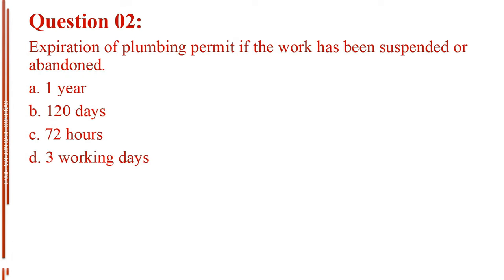Question number 2. Expiration of plumbing permit if the work has been suspended or abandoned. Letter A, 1 year. Letter B, 120 days. Letter C, 72 hours. Letter D, 3 working days.